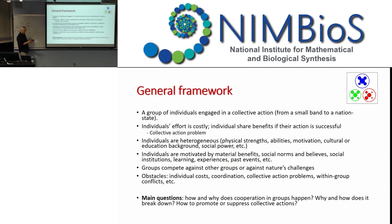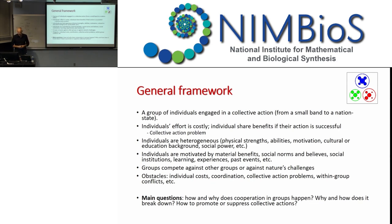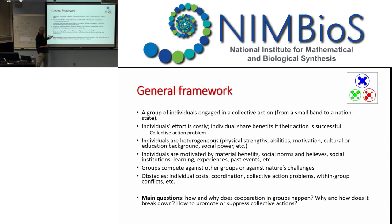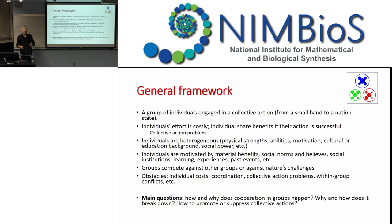Now I'll move into some modeling details. Basically we look at populations of individuals who live in groups. Individuals make certain efforts — for example, they collaborate. They're also different and can differ in a number of factors — they have different motivations, which can be material benefits, beliefs, norms, or learning. These groups may compete against other groups and encounter different obstacles. The questions we want to answer are how and when cooperation works, and how we can promote collective action, or under some conditions suppress it, depending on the context.